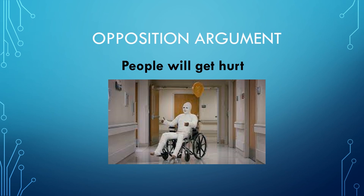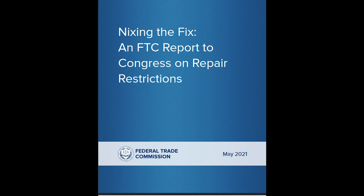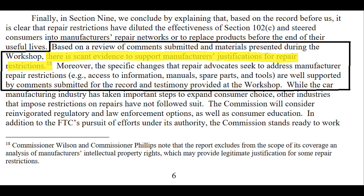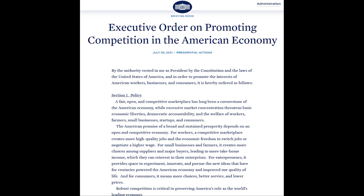The last opposition argument is that people will get hurt if they repair their own stuff or if unauthorized people repair their stuff. This argument usually comes up with medical equipment. However, in 2018, the FDA investigated whether additional regulation of independent repair was appropriate. Instead of finding safety issues like manufacturer lobbyists claimed, the FDA's report found that third-party repair carries no additional risk and that both they and manufacturers provide high quality, safe, and effective servicing of medical devices. The FTC concluded there is scant evidence to support manufacturers' justifications for repair restrictions, and that the FTC will pursue appropriate law enforcement and regulatory options. President Joe Biden issued an executive order citing this FTC report as why right to repair laws need to be a priority in his administration.